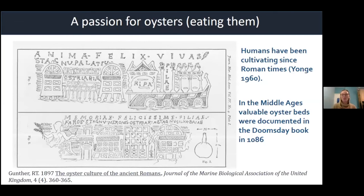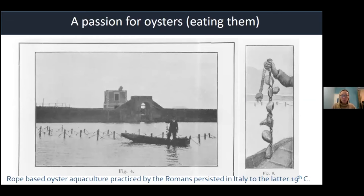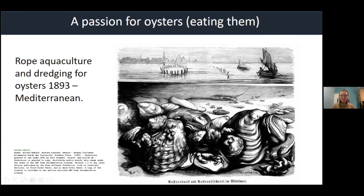Humans have had a passion for oysters since Roman times, cultivating them in oysteria where oysters were hung on strings. Valuable oyster beds are documented in the Domesday Book. This method of cultivation was used in Italy from Roman times until the late 19th century. This 1893 picture from the Mediterranean shows oyster aquaculture and people dredging, along with what appears to be a rich oyster reef with lots of biodiversity — something we rarely find anymore.